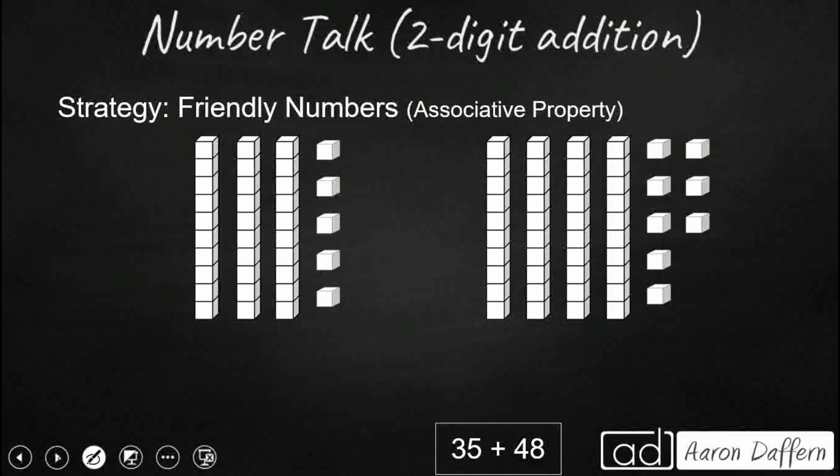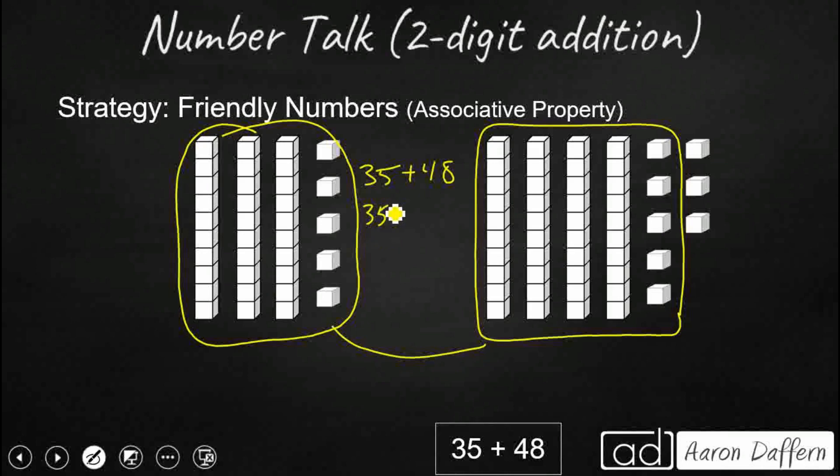We can also use the associative property to find some friendly numbers. Now, friendly numbers are numbers that are close to our original numbers that are a lot easier to add with. And anytime you can add with a five or a zero in the ones place is pretty good. And so this 35 is actually already pretty good. That's easy to add 35, but that 48 obviously is not that easy. But what if we just took a few off and brought out 45? So I'm going to take my 35, leave that the same. And I'm going to break up my 48 into 45 because that's going to be a lot easier to add.